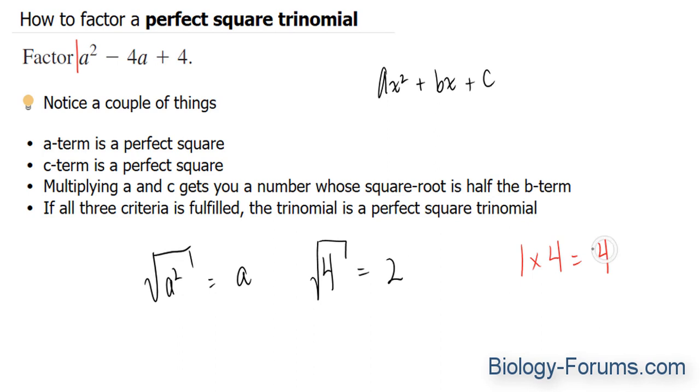Now, we have to square root this number and see if it is half of the central terms. Four square root is equal to two. Two is half of four. So this qualifies as a perfect square trinomial.